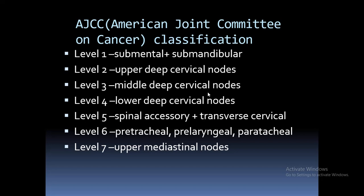There is another classification system which is surgically more significant and more widely accepted worldwide — the American Joint Committee on Cancer classification. In this system, we divide the cervical lymph nodes into seven levels. Level 1 includes submental and submandibular lymph nodes. Level 2 includes upper deep cervical lymph nodes. Level 3 includes middle deep cervical lymph nodes. Level 4 includes lower deep cervical lymph nodes. Level 5 includes spinal accessory and transverse cervical lymph nodes. Level 6 includes pre-tracheal, pre-laryngeal, and paratracheal lymph nodes. Level 7 includes the upper mediastinal nodes.